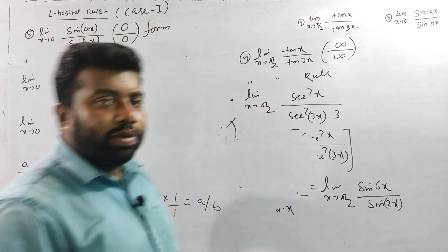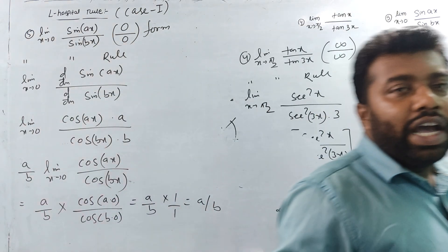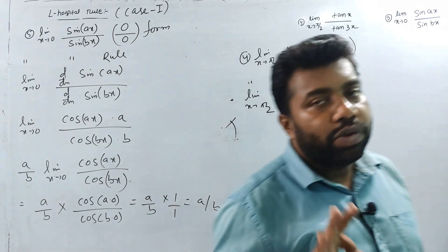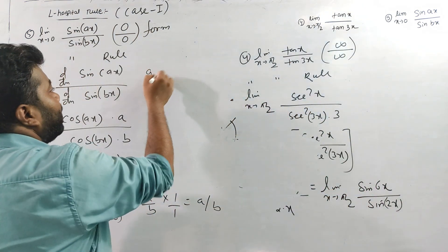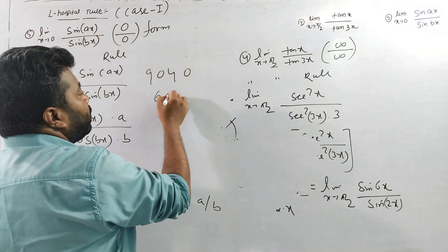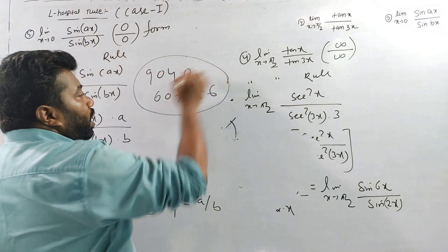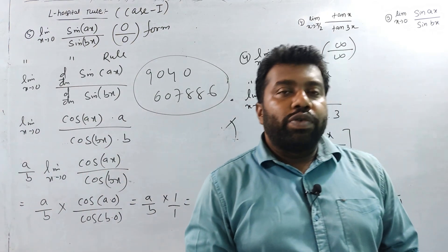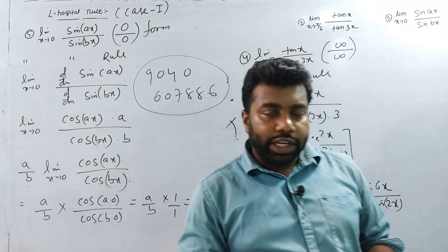Putting x = 0: a/b times cos(a·0)/cos(b·0) = a/b times cos(0)/cos(0) = a/b times 1/1. So the answer is a/b. I hope students, you have understood. If you want to see the full course, please contact this number: 9040607886, join the group, and complete the full course. Thank you for watching.